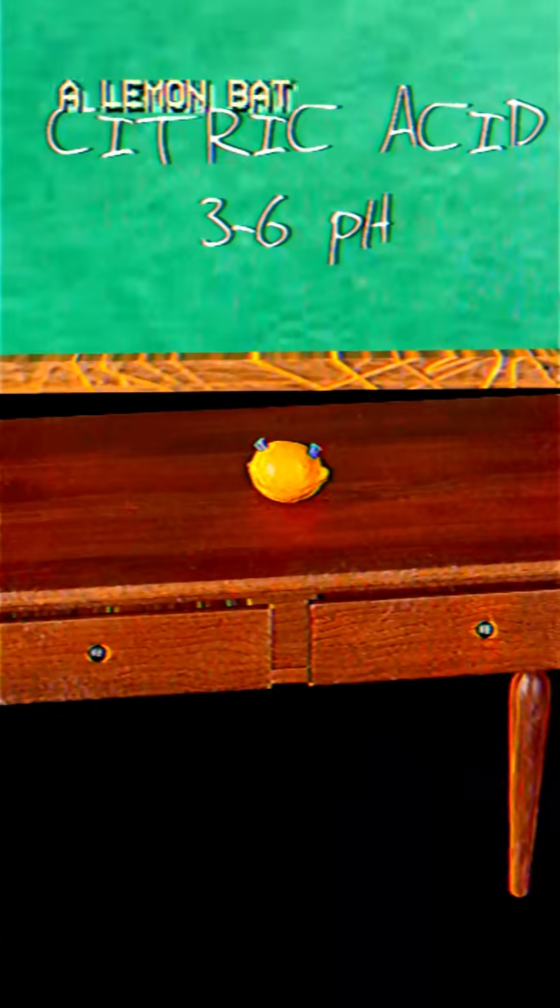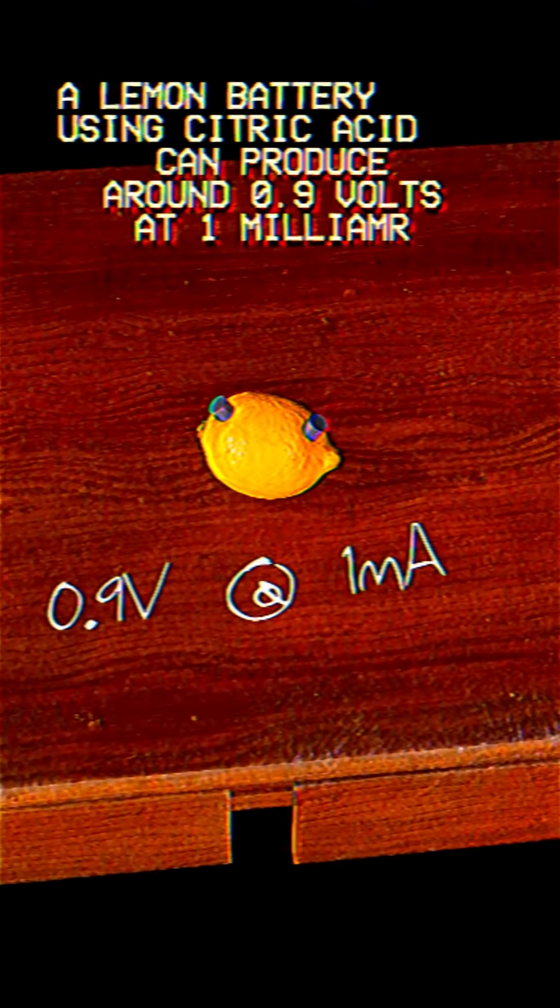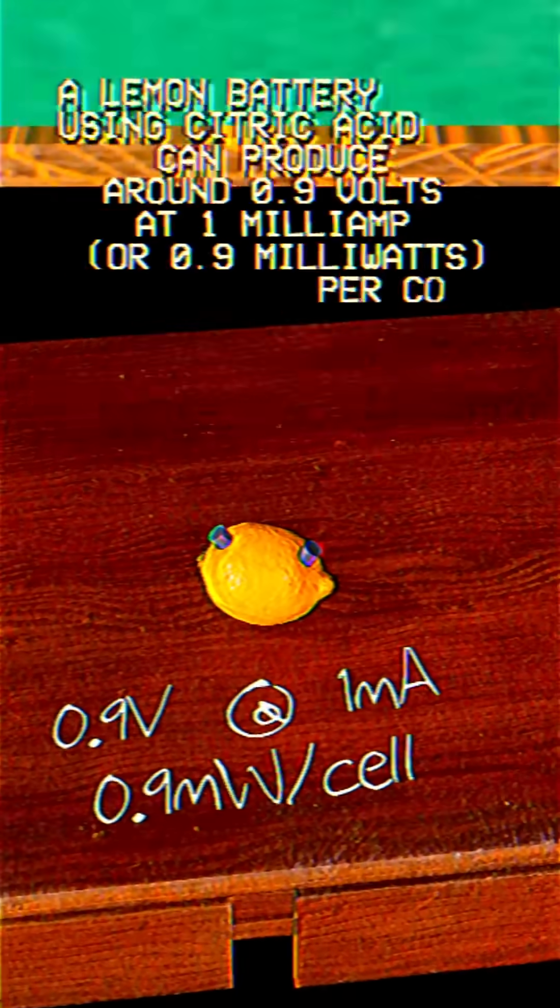A lemon battery, using citric acid, can produce around 0.9 volts at 1 milliamp, or 0.9 milliwatts per cell.